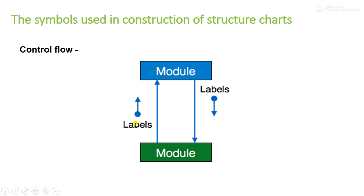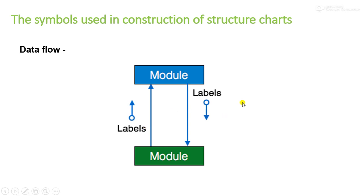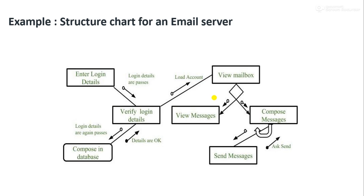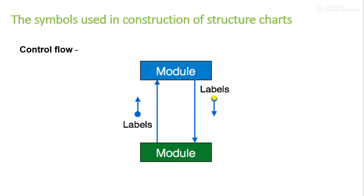In this label we need to mention the type of control, and in the other label we need to represent the data. These are the few symbols that we can use to draw our structure chart.